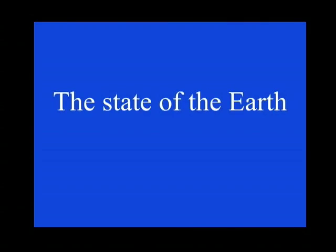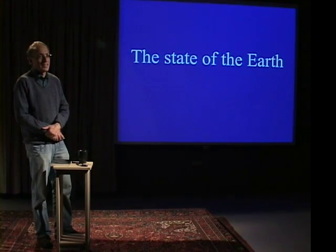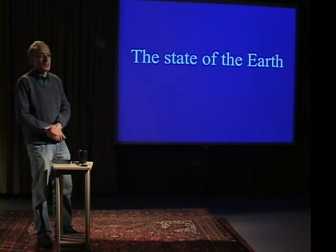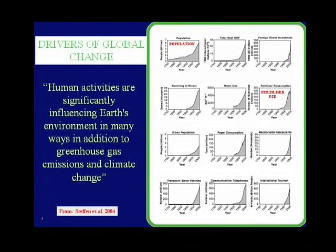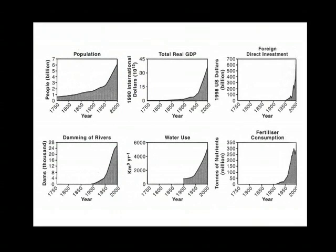You've probably all heard in the news and in the media that the Earth is in a very bad condition, and this is in fact the case. I've got some graphs here that illustrate what I'm talking about. Here are graphs, each of them going from 1750 to the year 2000, showing all sorts of things that are actually rather bad but that are increasing exponentially fast.